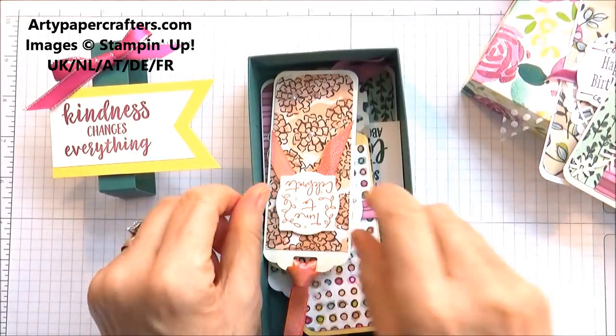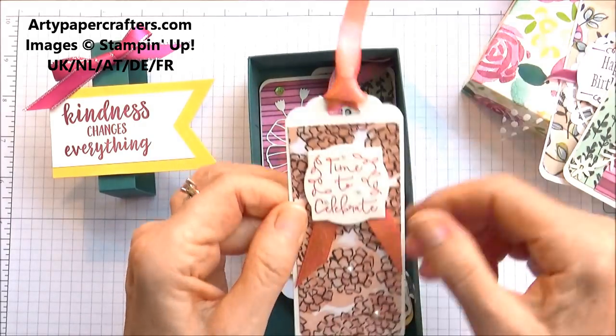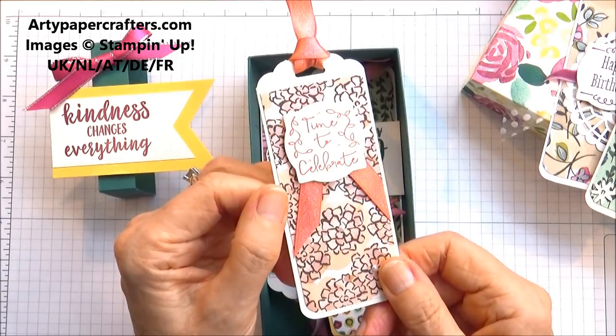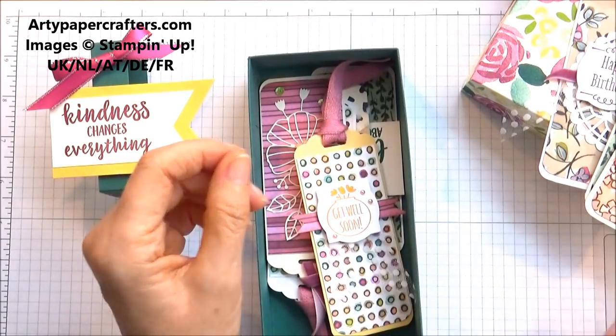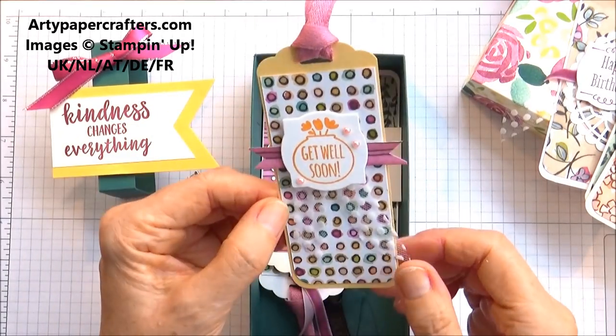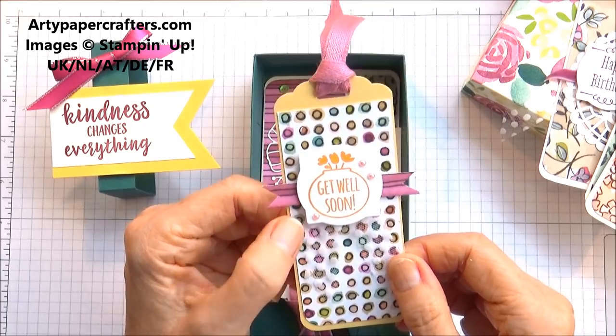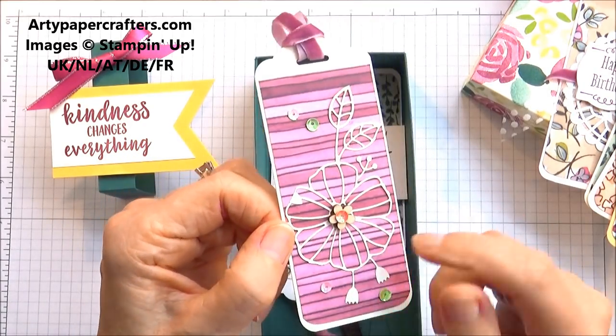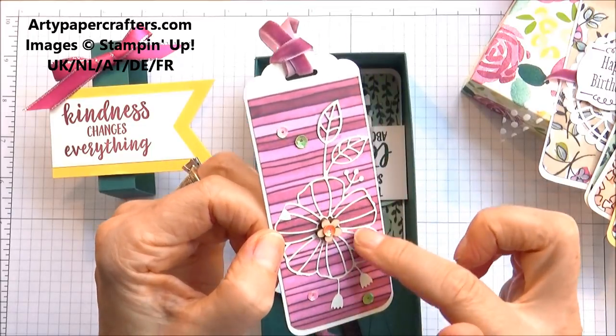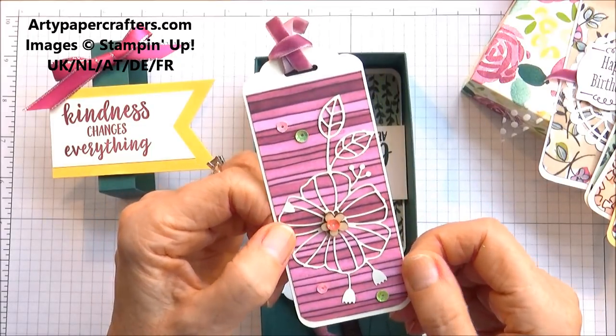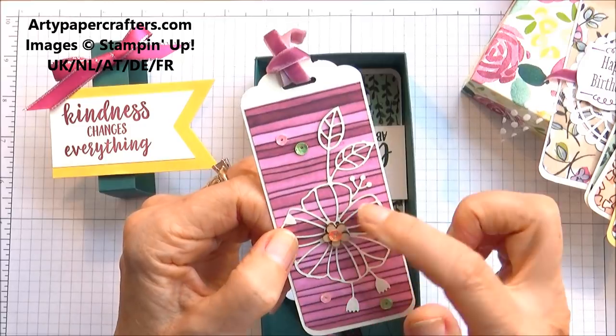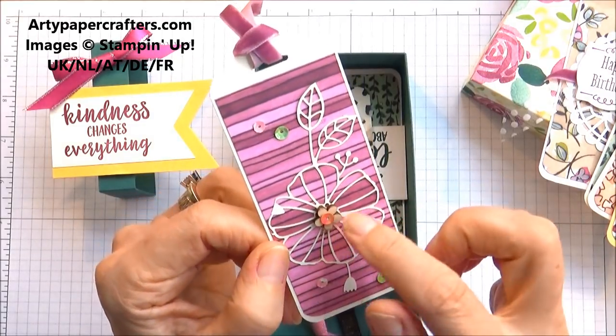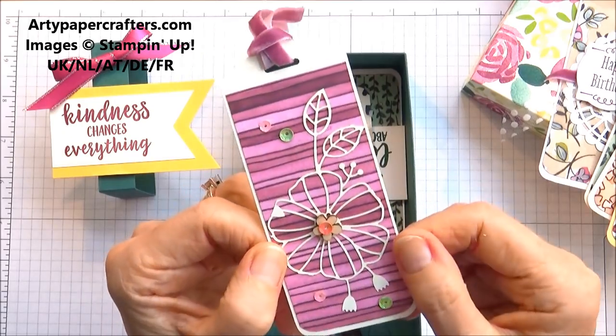So that is what I have been doing making some tags. This is the Share What You Love designer series paper which I am in love with at the moment and I seem to be putting it on all my projects. You can see that I've used different little embellishments and the laser cut specialty paper that we've got. I had some little pieces left over with some sequins and a little wooden flower in the middle.